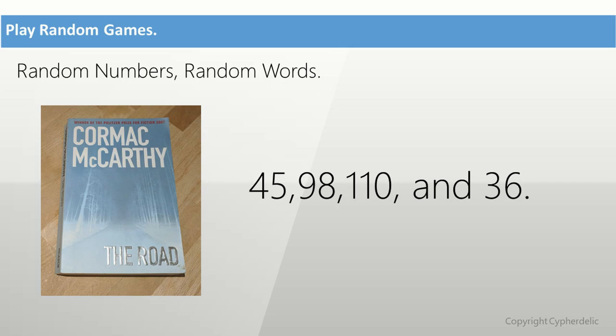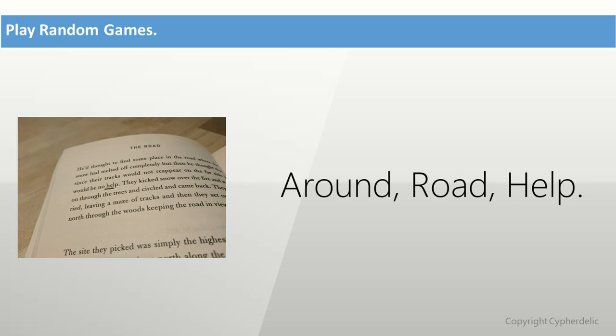Then choose four random numbers. The only restriction is that the first three numbers can't be higher than the number of pages in the book, and the fourth number can't be higher than the average number of words on a page. The first three numbers are page numbers and the fourth number is the word number on the page you will choose. So the first word will be the 36th word on page 45, the second word will be the 36th word on page 98, and the third word will be the 36th word on page 110.